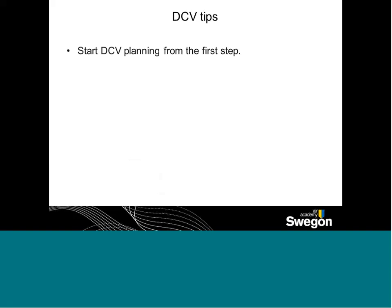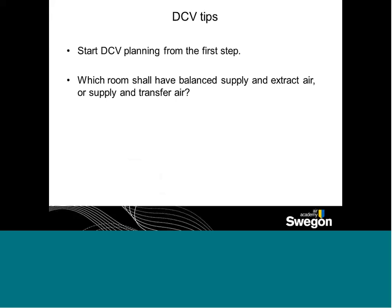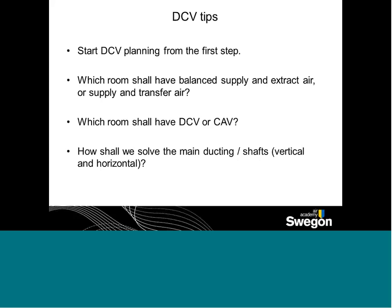Some tips on DCV systems: if possible, always start planning for DCV systems from the first step — don't try to take another system and convert it into one. You need to start with a clean sheet of paper. You need to understand which rooms need balanced supply and extract, and in which areas you need transfer grilles, perhaps into a corridor. Which rooms should have CAV as opposed to DCV, and how will that affect how the system remains in balance? And how are you going to size the main ducts and shafts, given the space available, including the effect on the central air handling system?